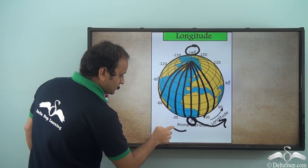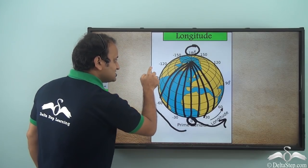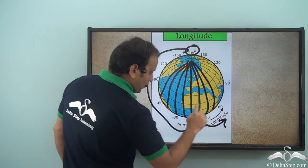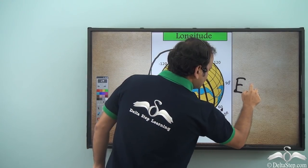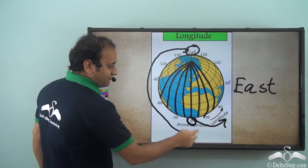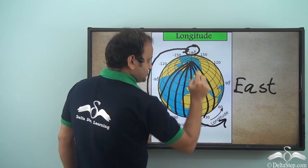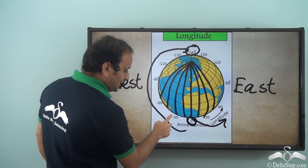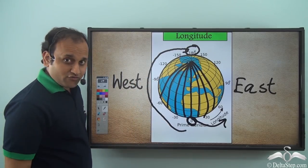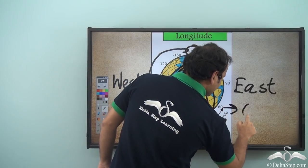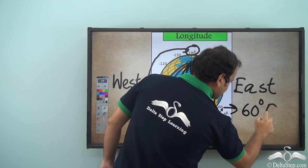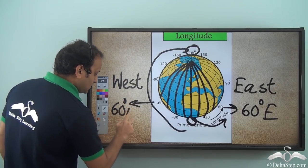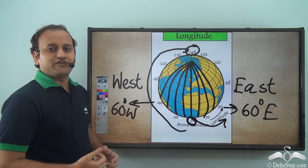On the western side they are 0, minus 30, minus 60, minus 90, minus 120, minus 150, and 180 again. So in the eastern hemisphere the degrees are in positive numbers, and in the western hemisphere in negative numbers. Another way of writing these is 60 degrees east for the eastern hemisphere and 60 degrees west for the western hemisphere.